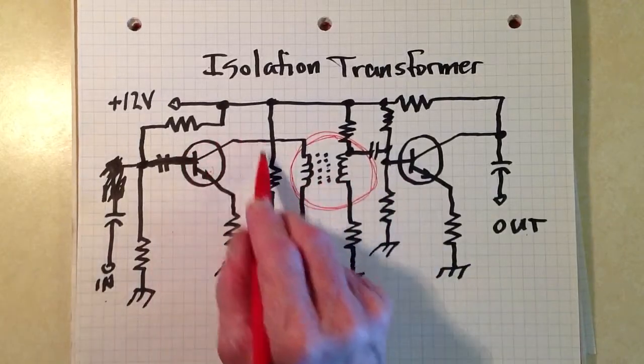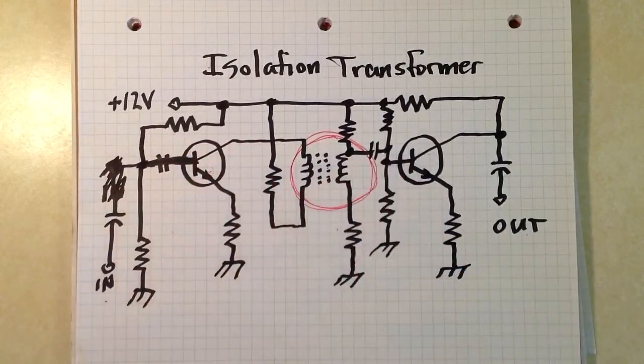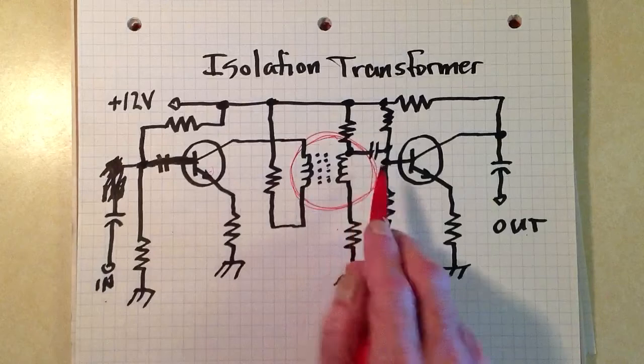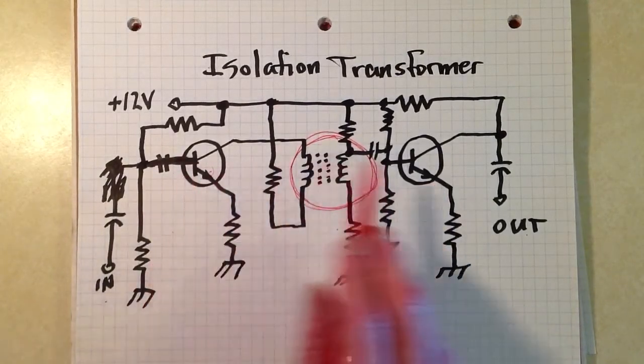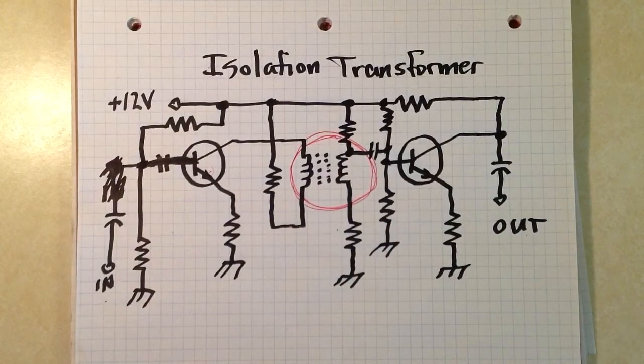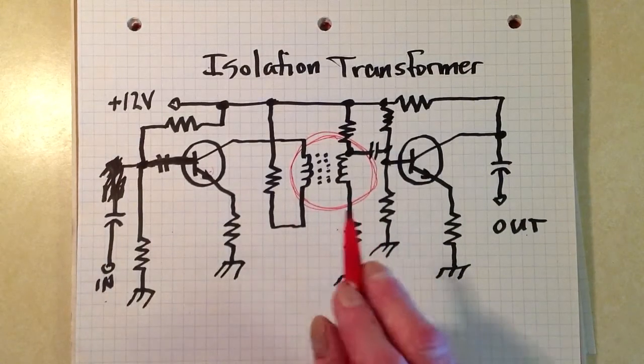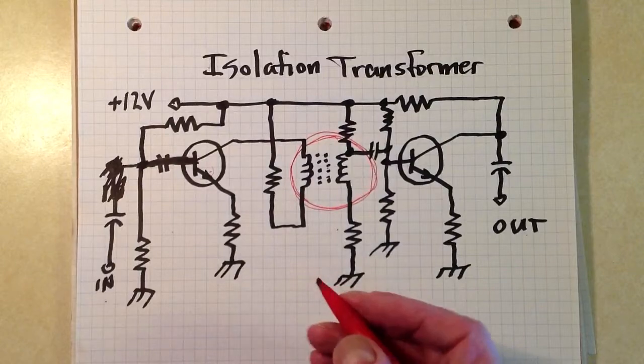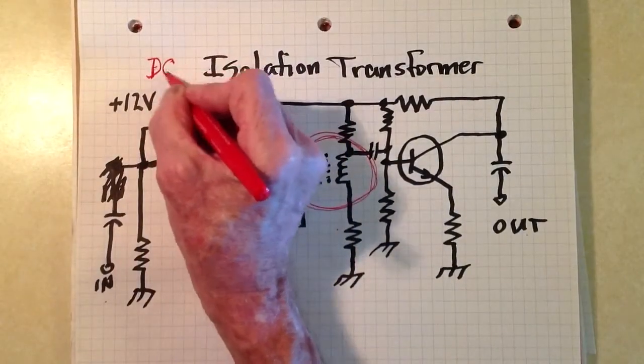It allows the alternating current audio signal to pass through from one transistor to the other, but it prevents any DC interactions between these two stages. In that sense, it isolates the stages for DC.